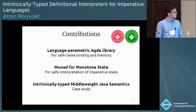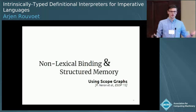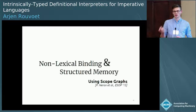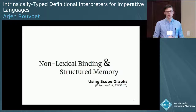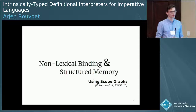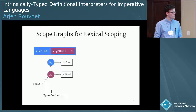Let's have a look at binding first. It seems to be rather established how you deal with lexical lambda-style binding in these interpreters, using well-typed de Bruijn indices. But if you look at non-lexical binding, nothing is as established. There is work by Pierre Neron and others on describing both lexical and non-lexical binding in a uniform way using scope graphs. We'll use this to define well-typed syntax for languages with non-lexical binding.